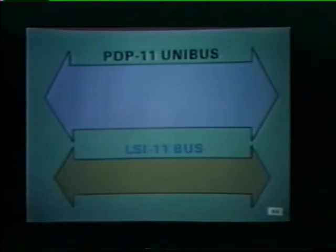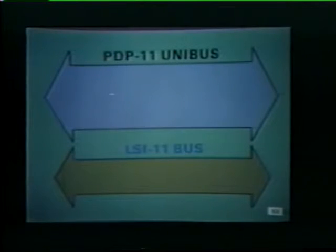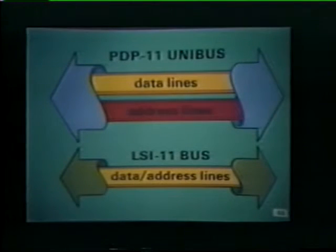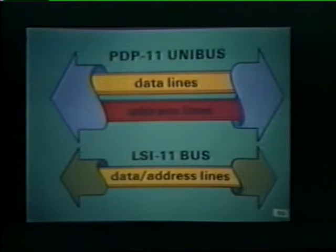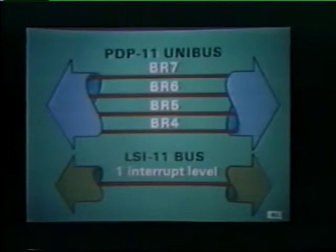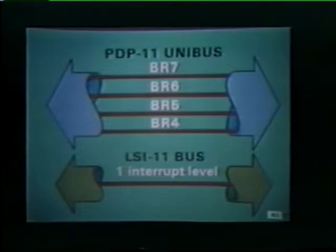The bus structure used in the LSI-11 is not compatible with the PDP-11 unibus. The PDP-11 unibus has one set of lines for data and another separate set of lines for addresses. The LSI-11, on the other hand, transmits data and addresses over the same set of lines. Also, the PDP-11 unibus contains four hardware interrupt levels, whereas just one interrupt level is implemented on the LSI-11 bus.